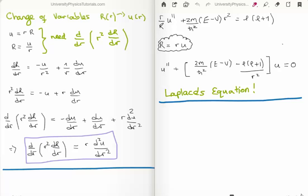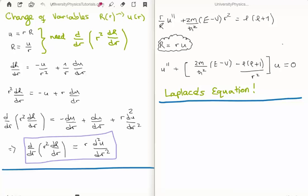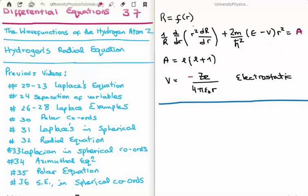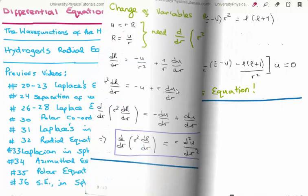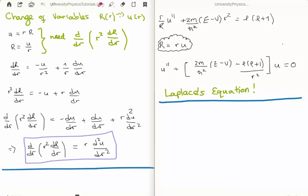Plugging it all into the radial equation is straightforward, but it doesn't lead to a very easy solution. So before I do that, I'm going to make a change of variables. At the moment we have capital R as a function of small r. What I'd like to do is change it so that we have a small u as a function of r instead. We define small u as small r multiplied by capital R. The operator from the radial equation we require is d/dr of r²·d(capital R)/dr, and we can rewrite that operator, which allows us to rewrite the radial equation.